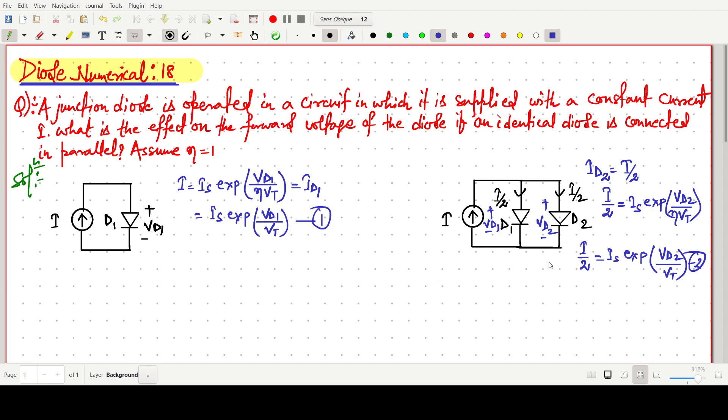So two equations are there, 1 and 2. What we can do, if we divide equation 1 with equation 2, it will be like I by I by 2, the saturation current Is is same as it is right. So Is exp VD1 by VT all divided by Is exp VD2 by VT. This Is will be cancelled out and this can be written as exp VD1 minus VD2 by VT.